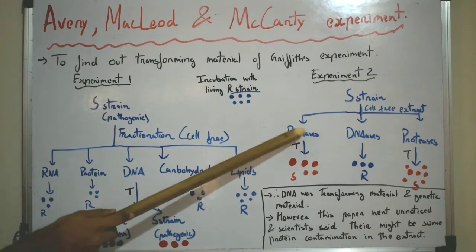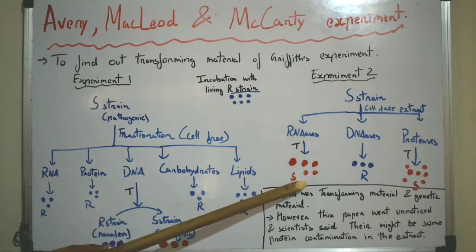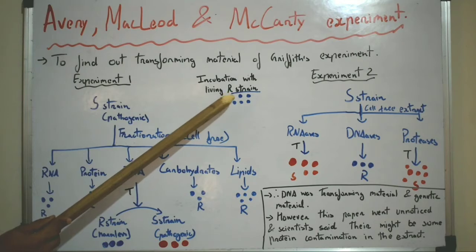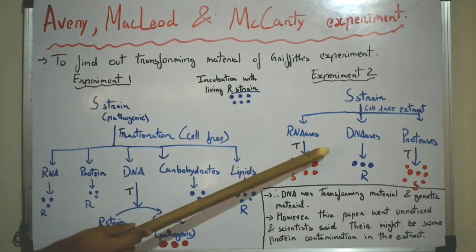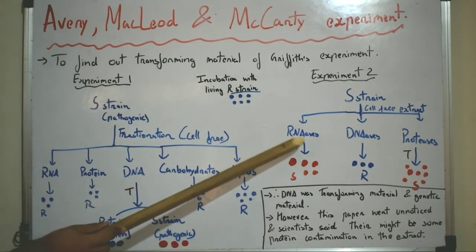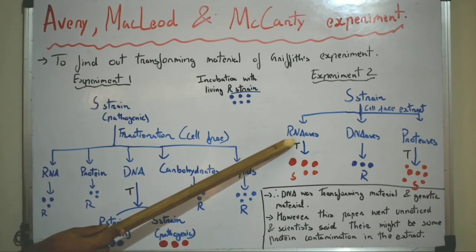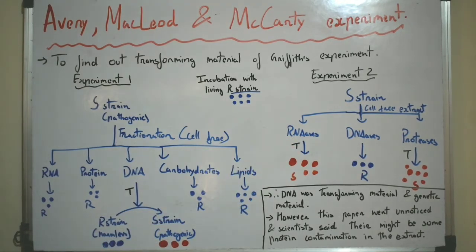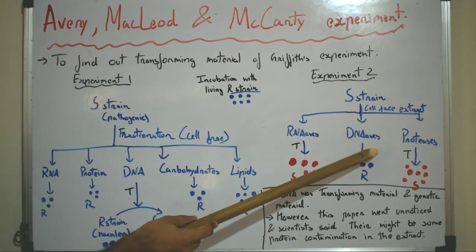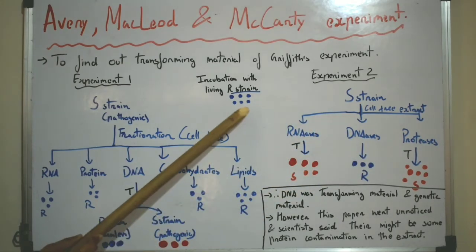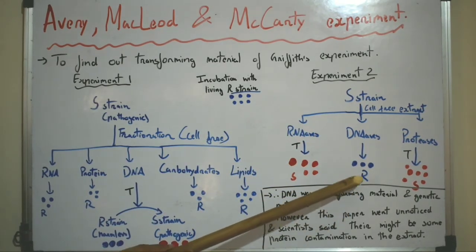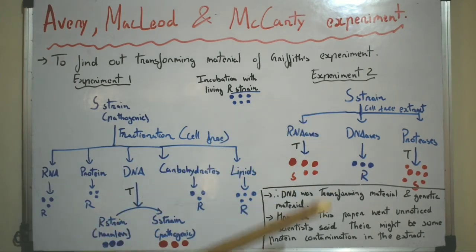When there was no RNA present in the extract and after incubation with the R-strain, they found that the R-strain was still transformed into S-strain. This suggests that RNA is not necessary for the transformation. However, when there was no DNA present in the extract, the R-strain was not transformed into S-strain, suggesting that DNA is necessary for the transformation.